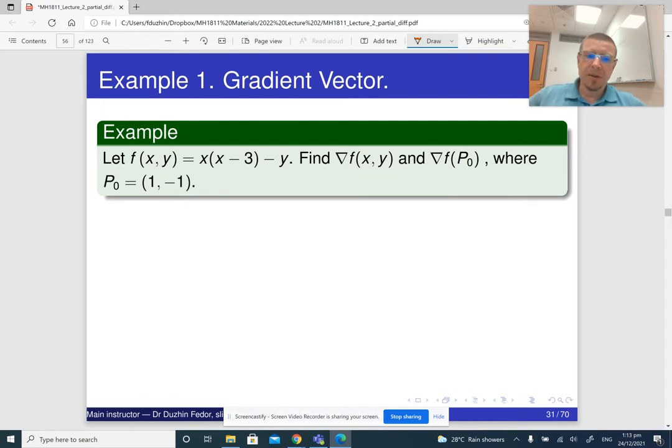Here are some examples. How can we compute the gradient vector of this function at a given point? Let me rewrite the function to make differentiation easier. x times (x minus 3) is going to be x squared minus 3x and then minus y.